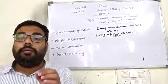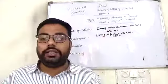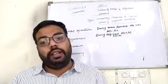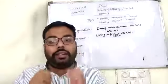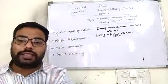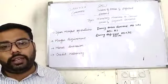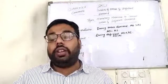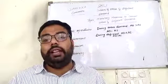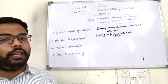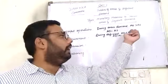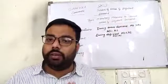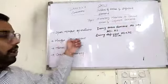So during excess demand, Margin Requirement is increased. And during deficient demand, Margin Requirement is decreased. When Margin Requirement decreases, more and more people will take loans, money supply in the economy increases, aggregate demand increases, and it becomes equal to aggregate supply.